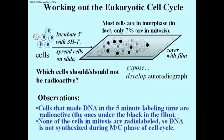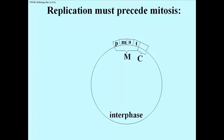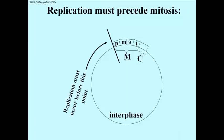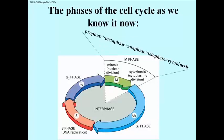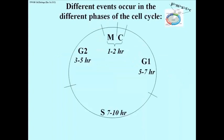That means DNA must not be synthesized during the mitosis and cytokinesis phases of the cell cycle. Replication must precede mitosis — it must occur at some point in interphase before the beginning of mitosis, before prophase, before the P phase. This is the phases of the cell cycle as we know them now, including prophase, metaphase, anaphase, telophase, and cytokinesis as part of the M phase. The cartoon I drew is closer to the actual times of the cell cycle, and the time each phase lasts is variable depending on the cell type.